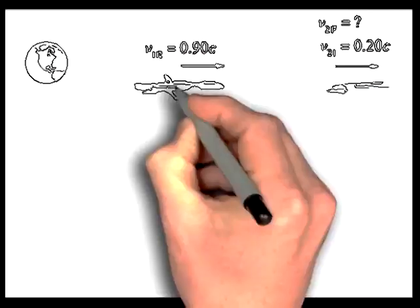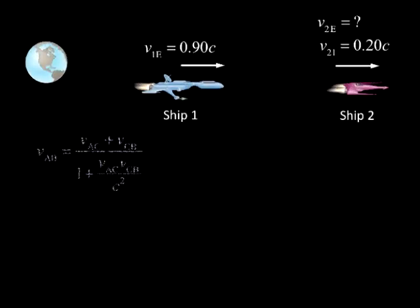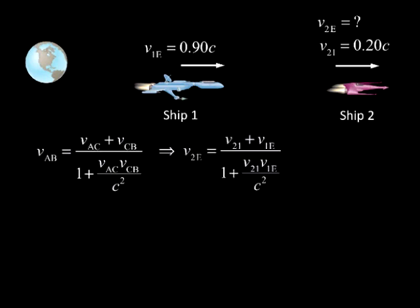If we apply this equation to our previous problem, we have VAB equals VAC plus VCB divided by 1 plus VAC VCB divided by C squared.